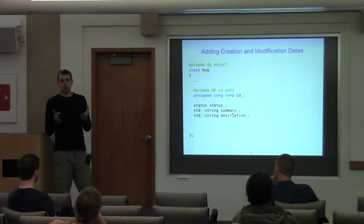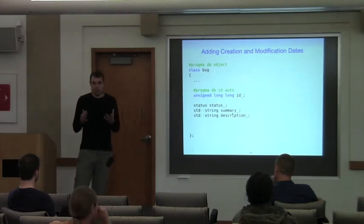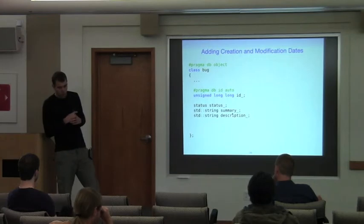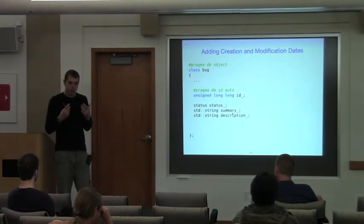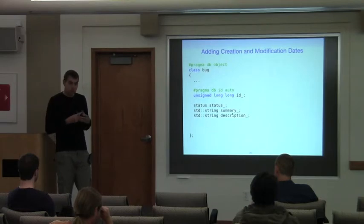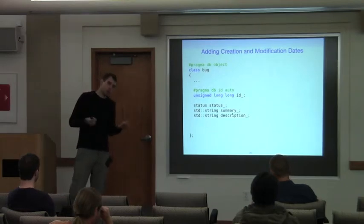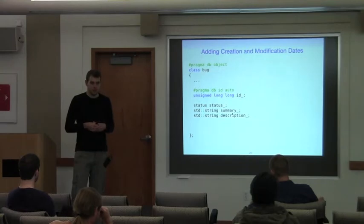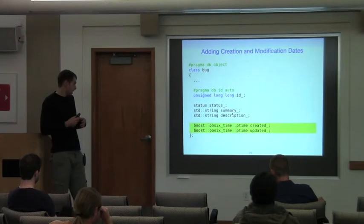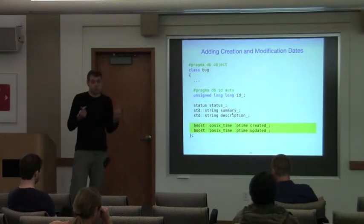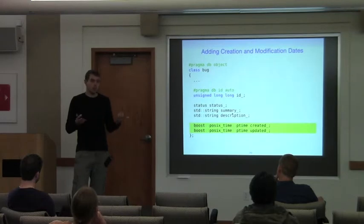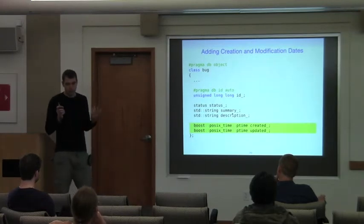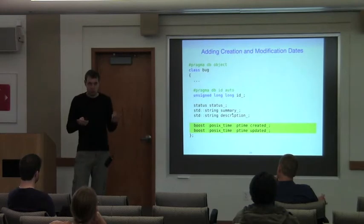Our bug report is currently very bare bones. The first thing we'd like to add is creation and modification dates. The question is what to use to store these timestamps — the Boost DateTime library sounds like a good idea. We just need to take a quick detour and talk about ODB profiles. An ODB profile is a generic mechanism for integrating ODB with widely used frameworks and libraries — it's glue code which allows us to use containers, smart pointers, and value types from those frameworks as if natively supported by ODB.